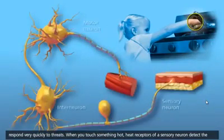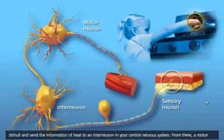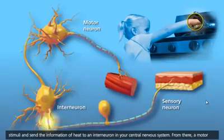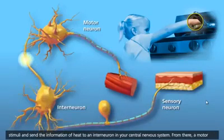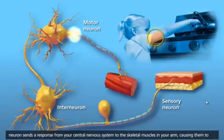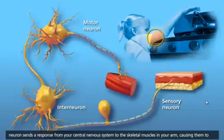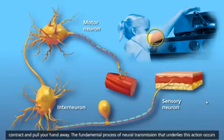When you touch something hot, heat receptors of a sensory neuron detect the stimuli and send the information of heat to an interneuron in your central nervous system. From there, a motor neuron sends a response from your central nervous system to the skeletal muscles in your arm, causing them to contract and pull your hand away.